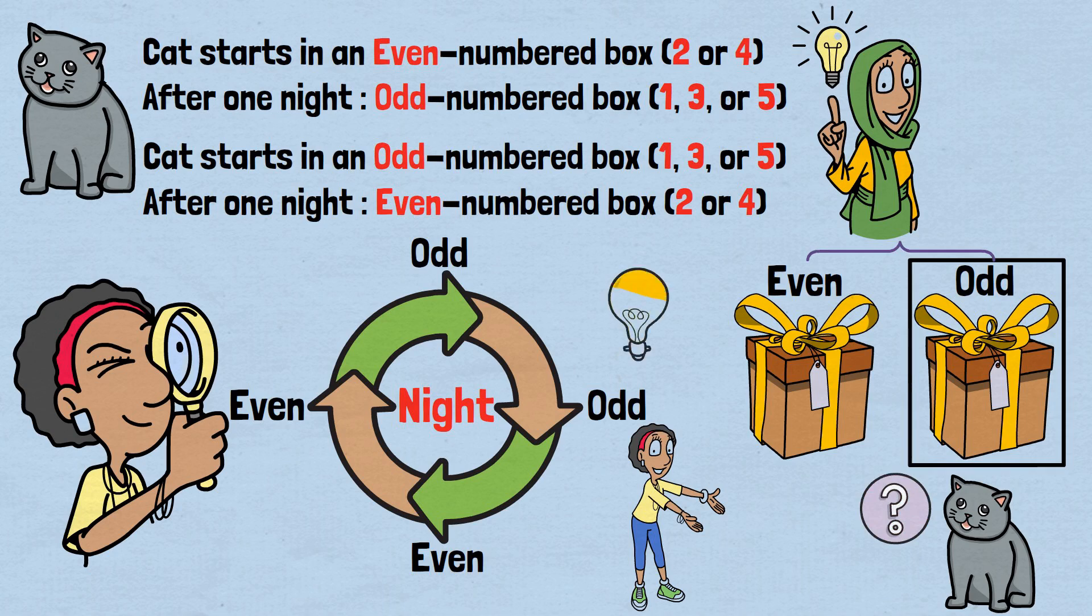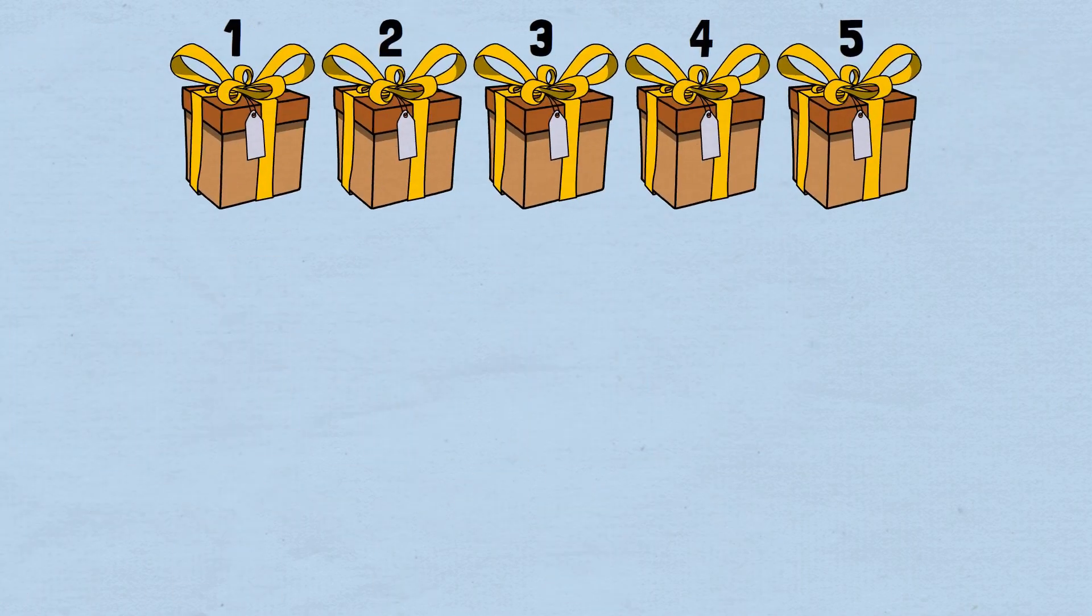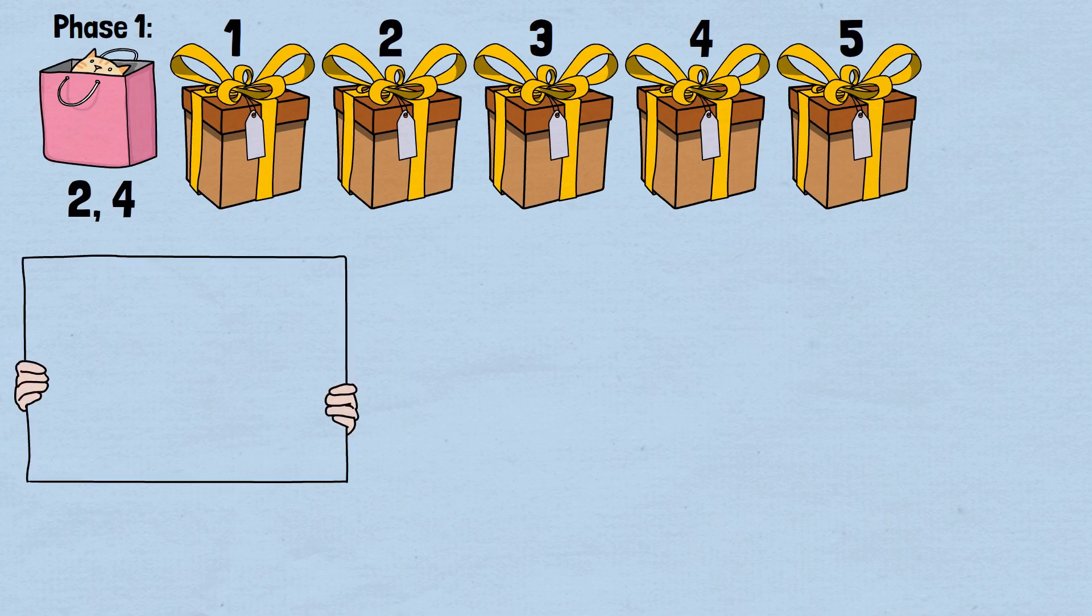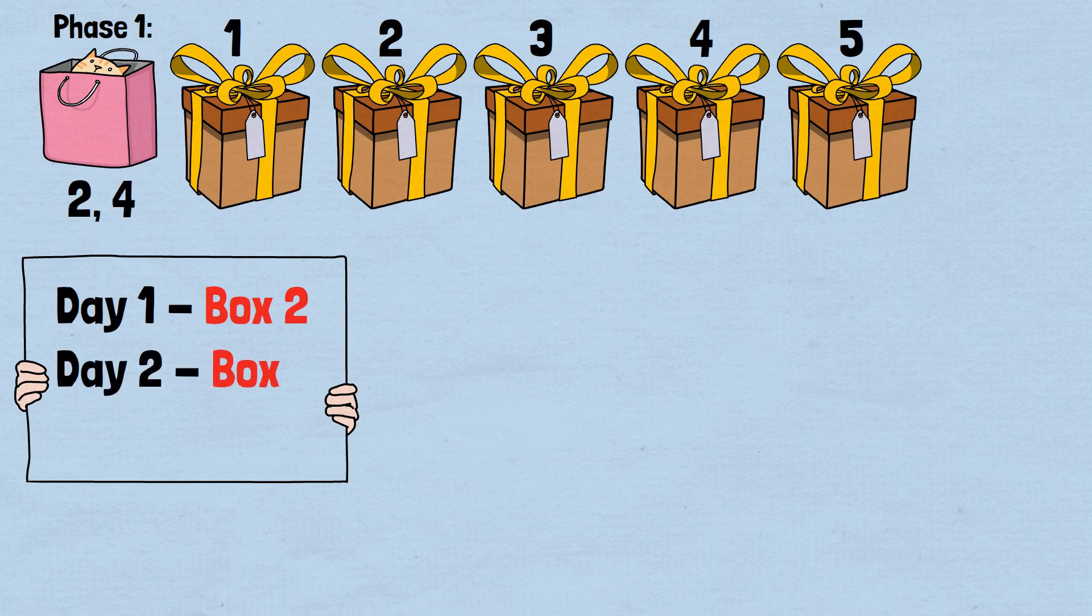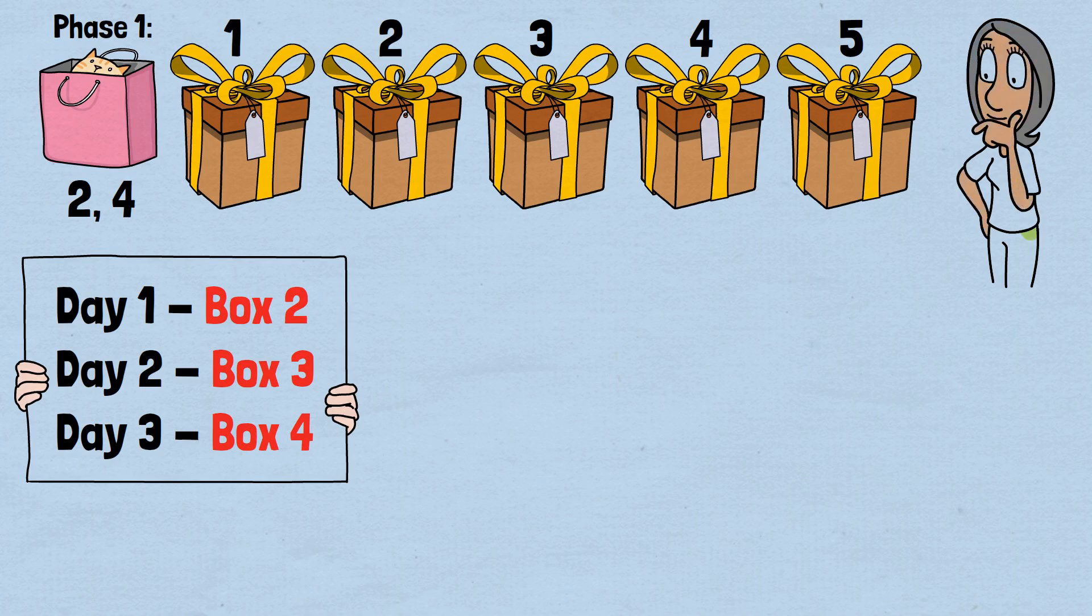Let's work through the complete solution systematically, starting with the case where we can catch the cat quickly. Phase 1: Catching cats if it starts in even positions. Our strategy begins with this sequence. Day 1: Box 2. Day 2: Box 3. Day 3: Box 4. Why does this work for cats starting in even positions? Let's trace through both possibilities.